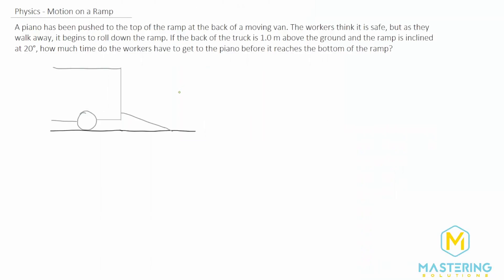Welcome to Mastering Solutions. This is another motion on a ramp problem. In this question, a piano has been pushed to the top of the ramp at the back of a moving van. The workers think that it's safe, but as they walk away, it begins to roll down the ramp.